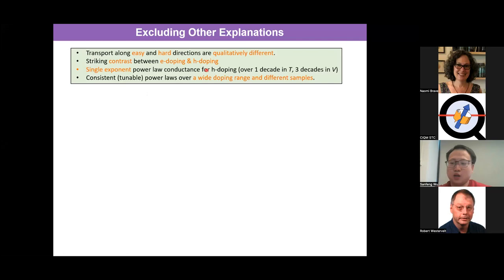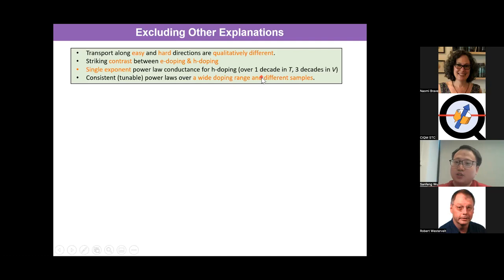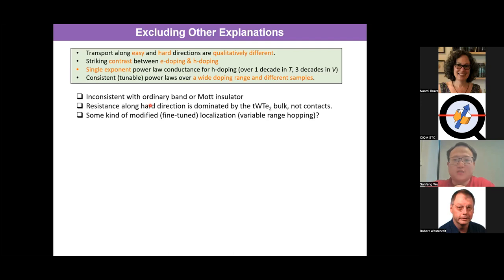Let me give a brief summary of what we have already seen. The key phenomena observed are: for the twist bilayer WTe₂ for small angles near five degrees, we see very strong, qualitatively different transport along easy and hard directions, with very large contrast between electron and hole doping — hole doping is anisotropic, electron is not. The hole doping over a wide range of parameters — including one decade in temperature and three decades in bias voltage — is described by a single-exponent power-law behavior. You can tune the parameters through twist angle and doping over a wide range and this behavior remains.